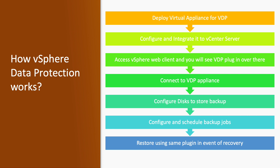After deploying, you configure and integrate it with the vCenter Server. Once deployment and configuration are done, you can access the VMware vSphere Data Protection plugin from the vSphere Web Client. Log in to the vSphere Web Client, go to the home page, and you will find the option for vSphere Data Protection. Click on it and connect existing appliances.